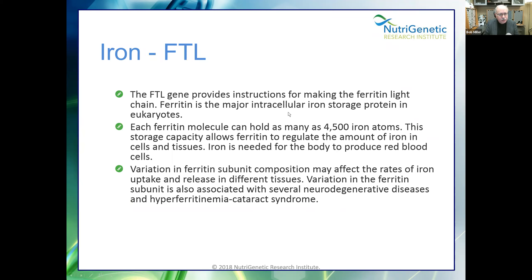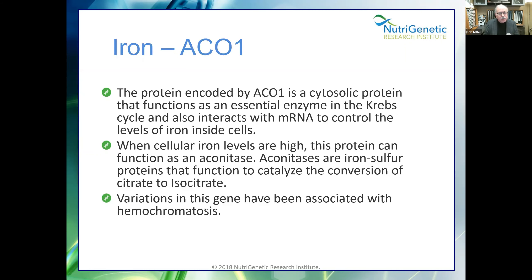Ferritin light chain provides instructions for making the major intracellular iron storage protein. An optometrist told me he finds this incredibly correlated with cataracts — quite fascinating, as it relates to ferritin in the eye. The ACO1 gene has variations associated with hemochromatosis. In our functional genomic analysis software, we have a whole panel showing all of these together. You have to look at them globally — we have to think: do I have multiple factors building upon each other?